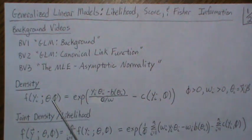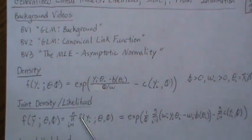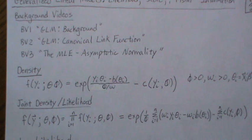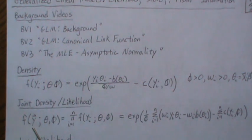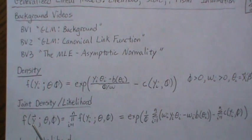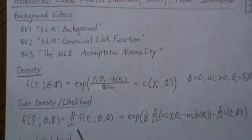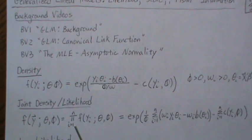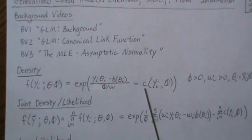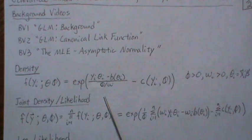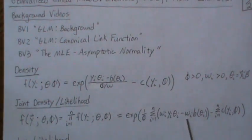This is for an individual, so we need the joint density. Ultimately we want to think of it as a likelihood. The joint density is for all the y's — a vector of y1 through yn — so it's the product. Since the individuals or observations are independent, it's just the product of the individual densities, and when you take the product you sum the exponents.